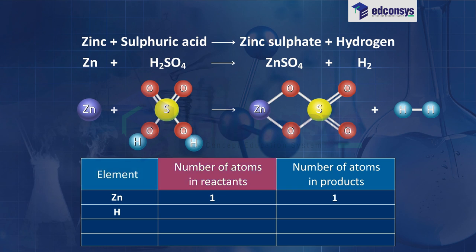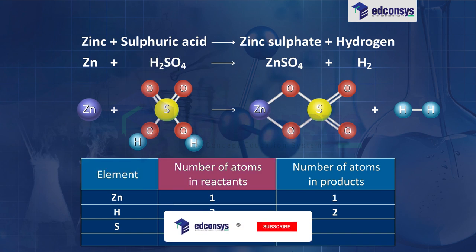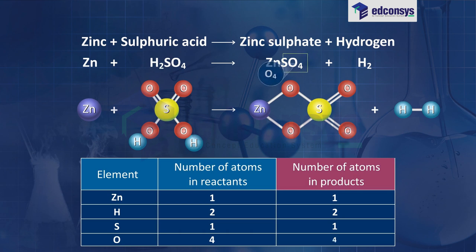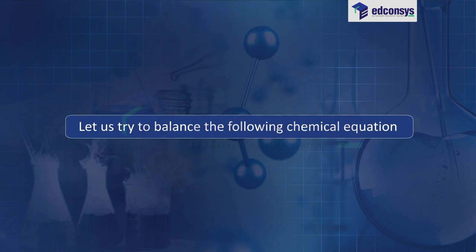Element H: atoms in reactants = 2, atoms in products = 2. Element S: atoms in reactants = 1, atoms in products = 1. Element O: atoms in reactants = 4. As the number of atoms of each element is the same on both sides of the arrow, this equation is a balanced chemical equation.